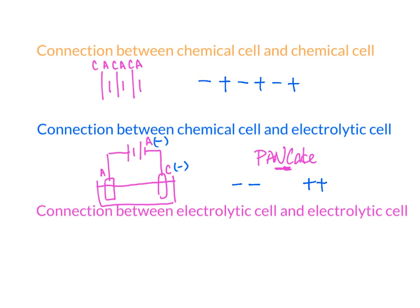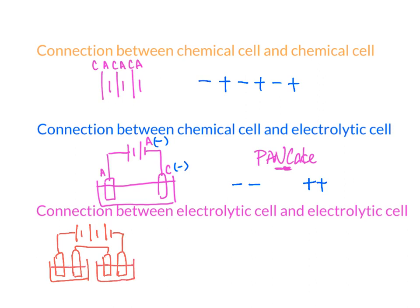Between two electrolytic cells — same type — they will also be positive, negative, positive, negative alternating. For example, if this one is negative, because negative points to negative going from chemical cell to electrolytic cell, then this one is also negative. So if this one is negative, this one is positive. Then checking the other side — positive points to positive since they are chemical cell to electrolytic cell.